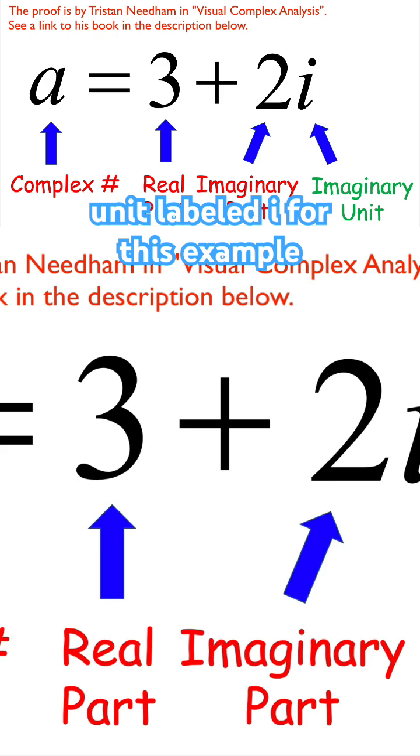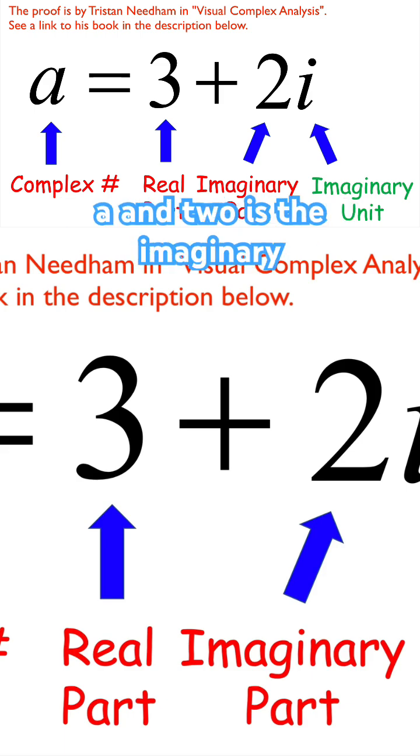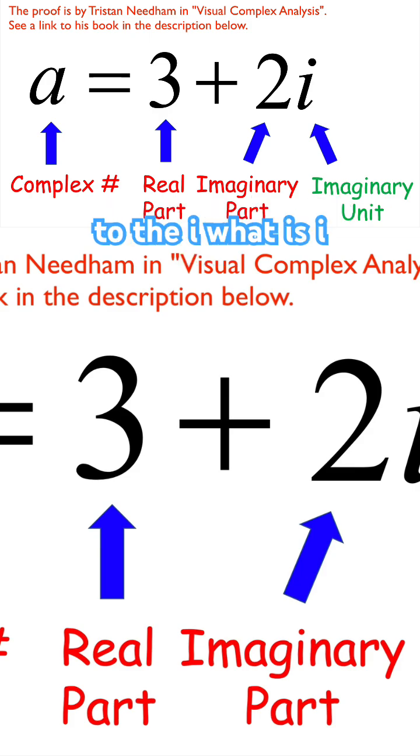For this example, 3 is the real part of a, and 2 is the imaginary part of a, even though 2 is a real number. It's next to the i.